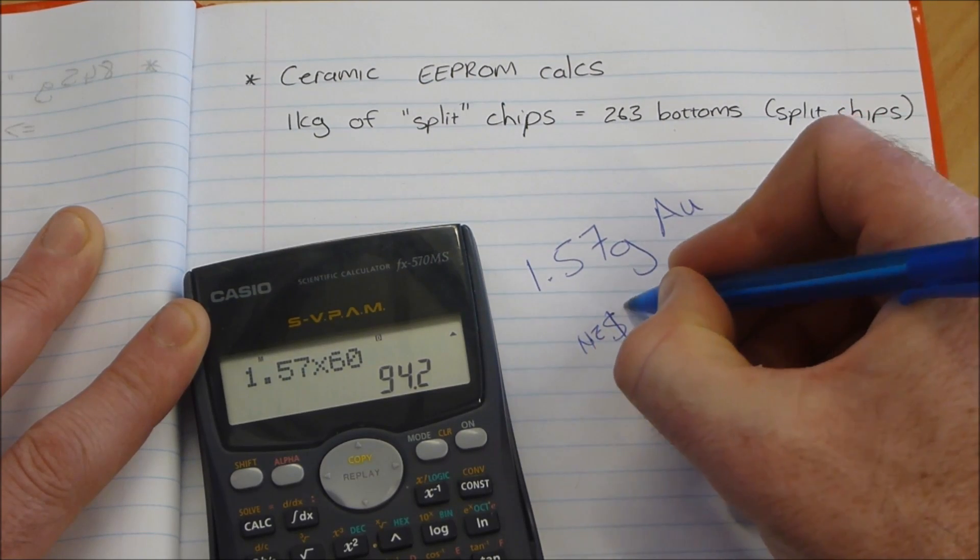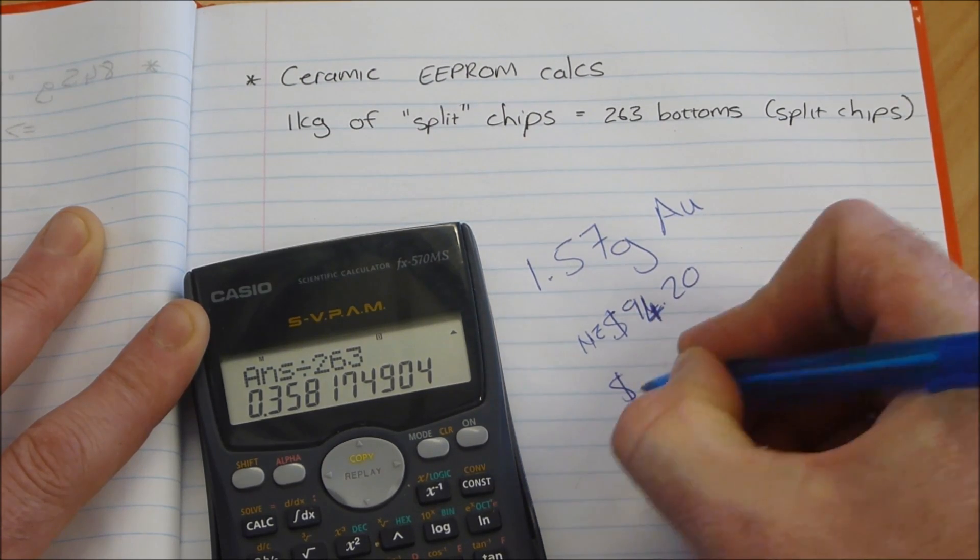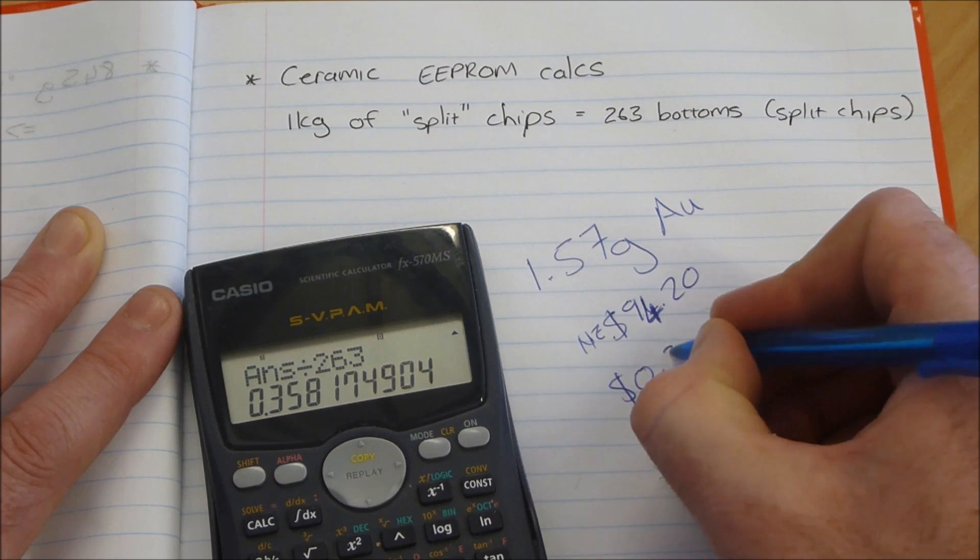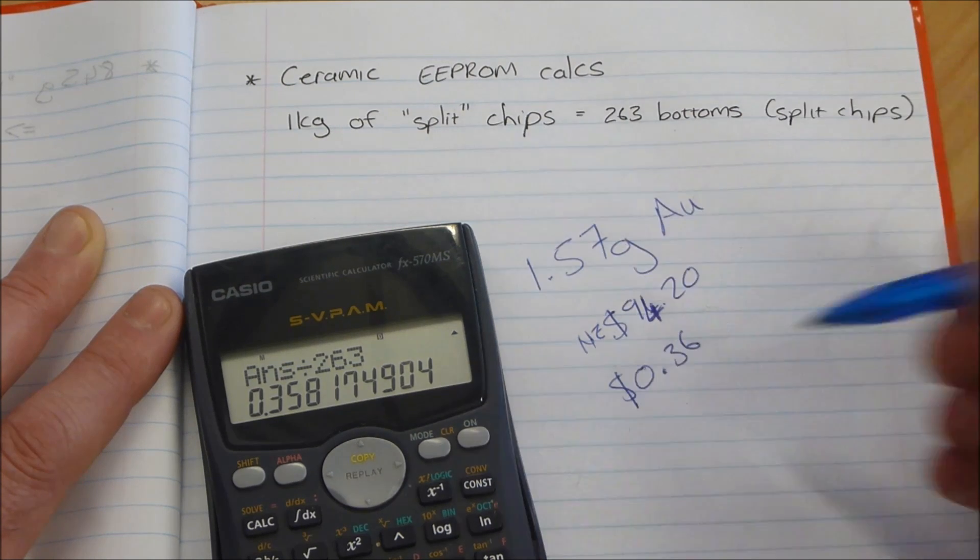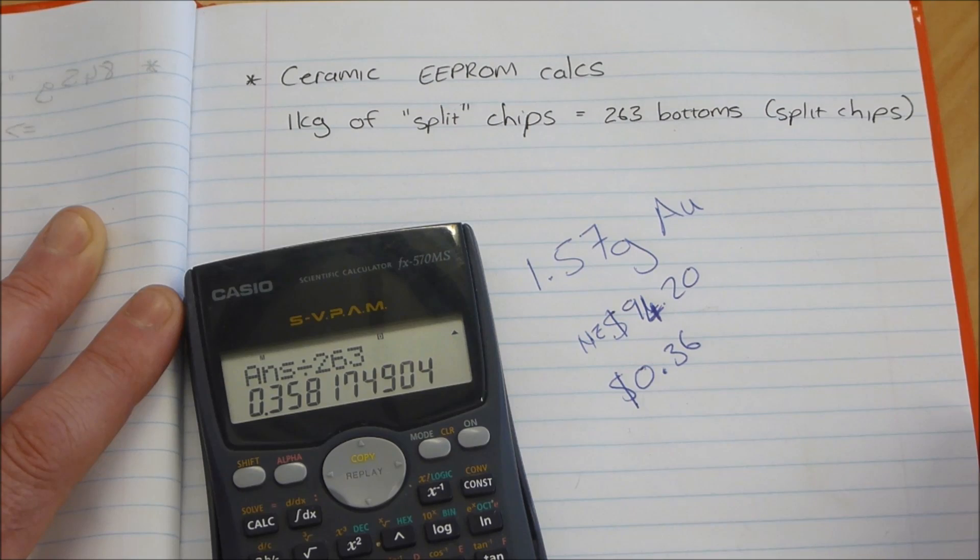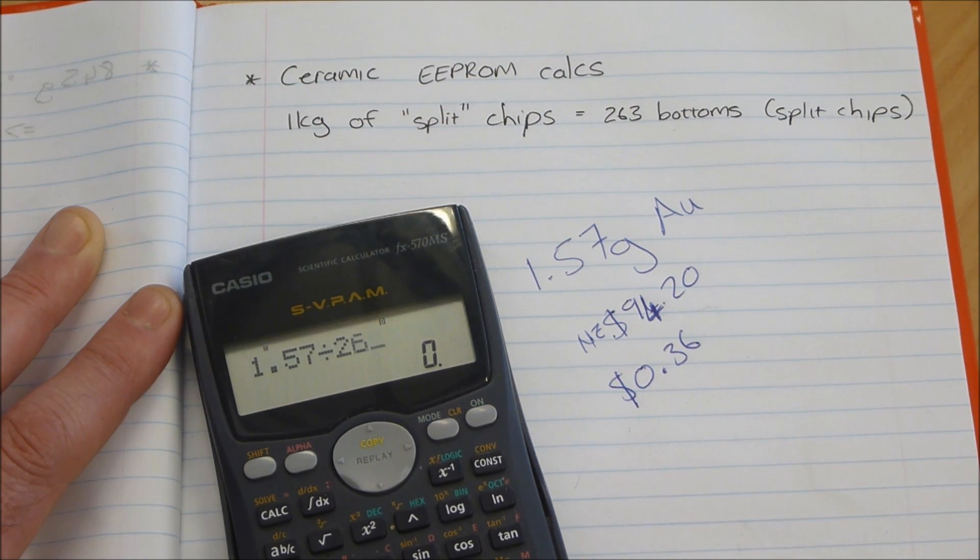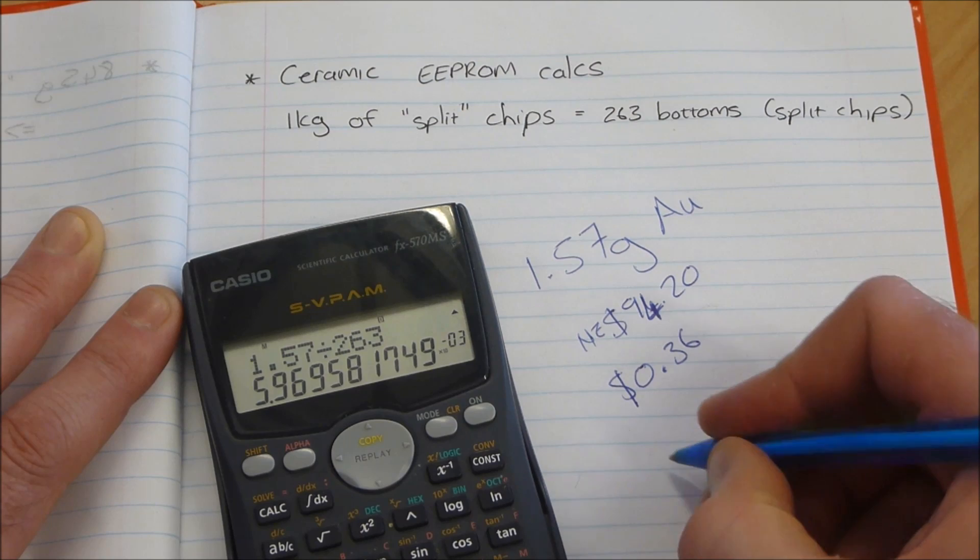If we divide that by 263, that means that each of those ICs are worth 36 cents—zero dollars and 36 cents to me. Which is definitely less than I'd hoped for, but to be honest they're very easy to process so it is what it is. It's probably roughly the right amount for a good mix of ICs like I've got there. In terms of what that means in gold, 1.57 grams divided by 263, so there is about 6 milligrams of gold for each of those ceramic ICs.